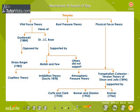Mechanism of Ascent of Sap. To explain the mechanism of Ascent of Sap, certain views have been given by scientists, which can be divided into three heads: Vital Force Theory, Root Pressure Theory, and Physical Force Theory.